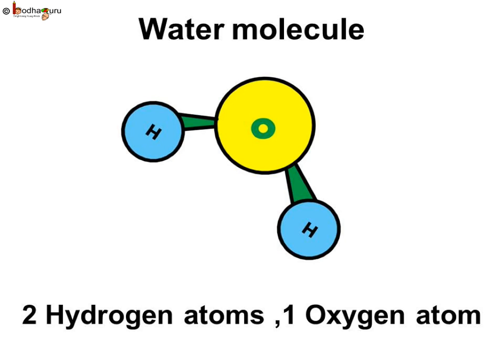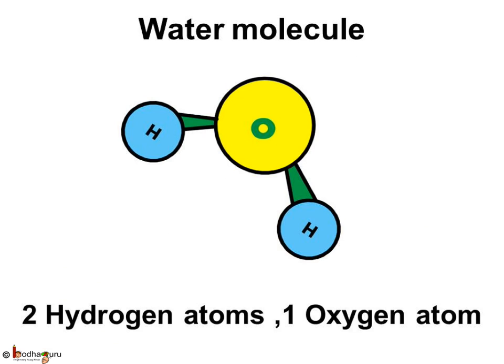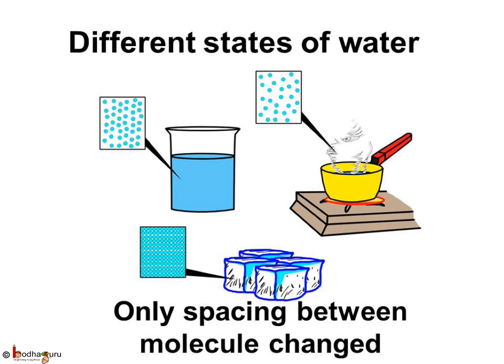When water changes into vapor or ice, the composition of the molecule of water remains the same. That is, one molecule of water will continue to have two atoms of hydrogen and one atom of oxygen. Just the space between the molecules changes, and hence this change can be reversed.